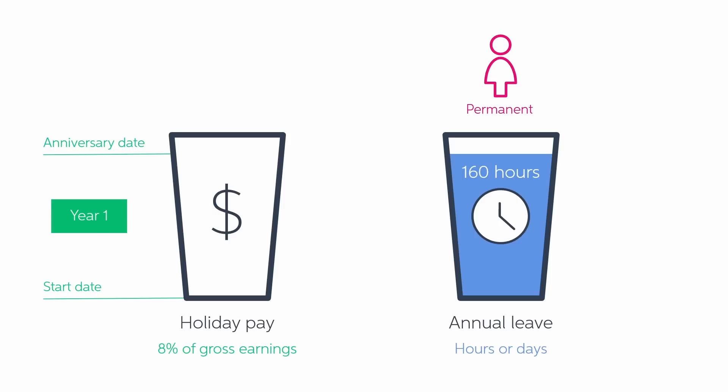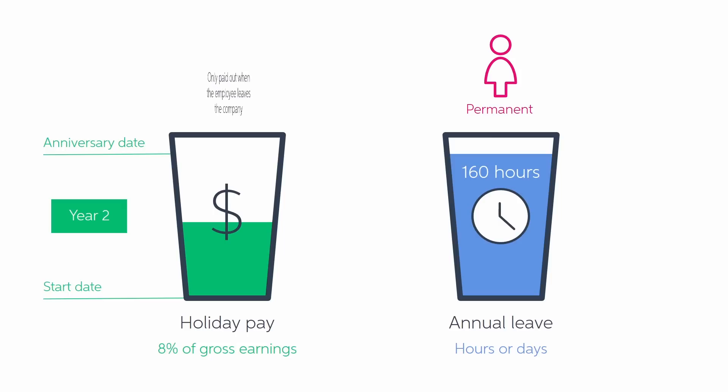Annual leave is the entitlement you draw from when you take time off. Employees are entitled to 4 weeks of annual leave each year. So for example, if your employee works 40 hours each week, they're entitled to 160 hours a year. Remember, annual leave is held in time — hours, days or weeks — rather than a dollar value. As these staff continue to work after their anniversary date, their holiday pay accrual continues and the process repeats, rolling into annual leave at their next anniversary date.